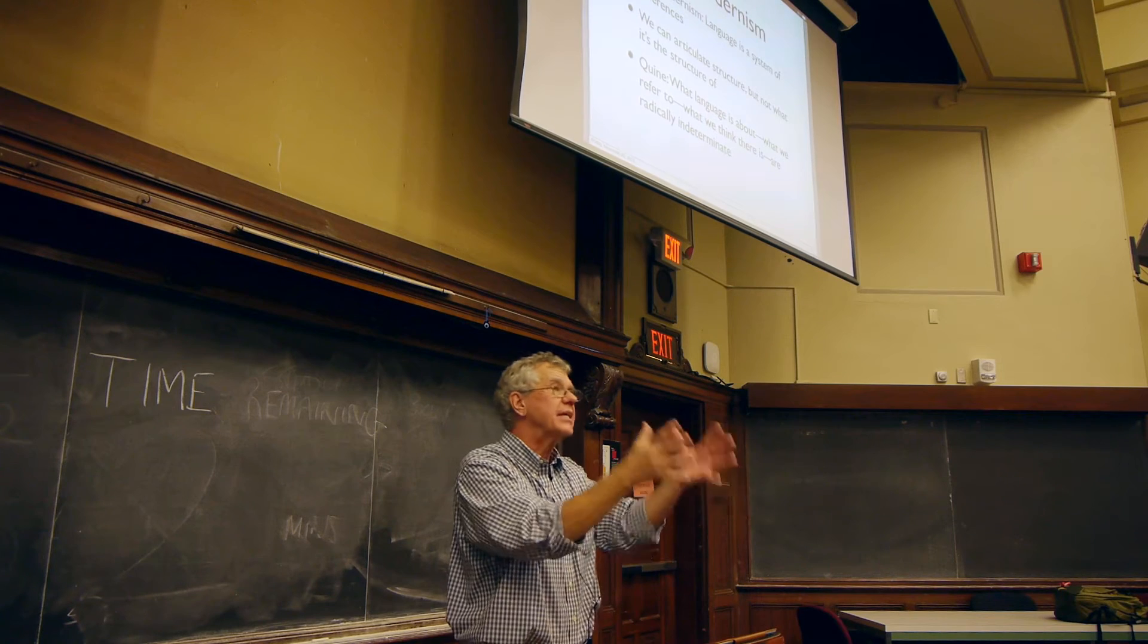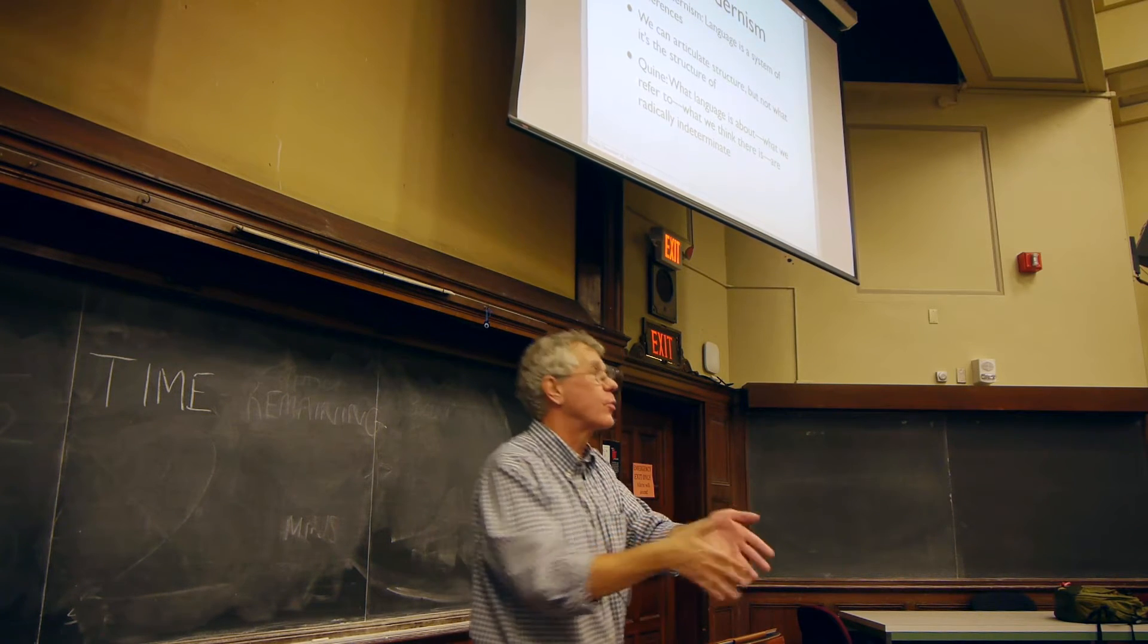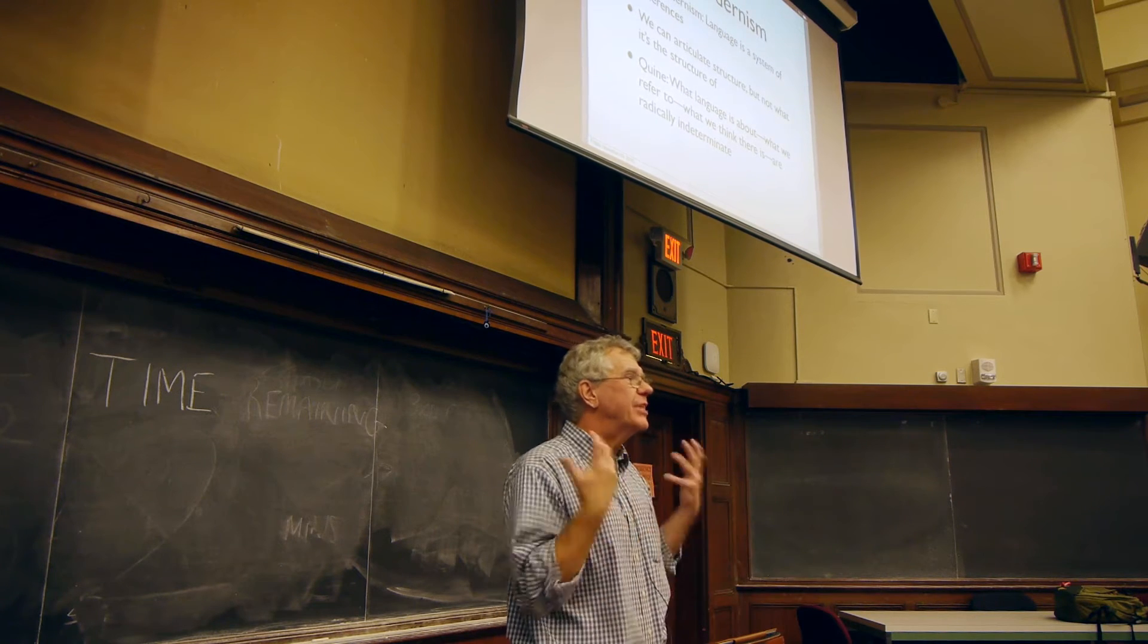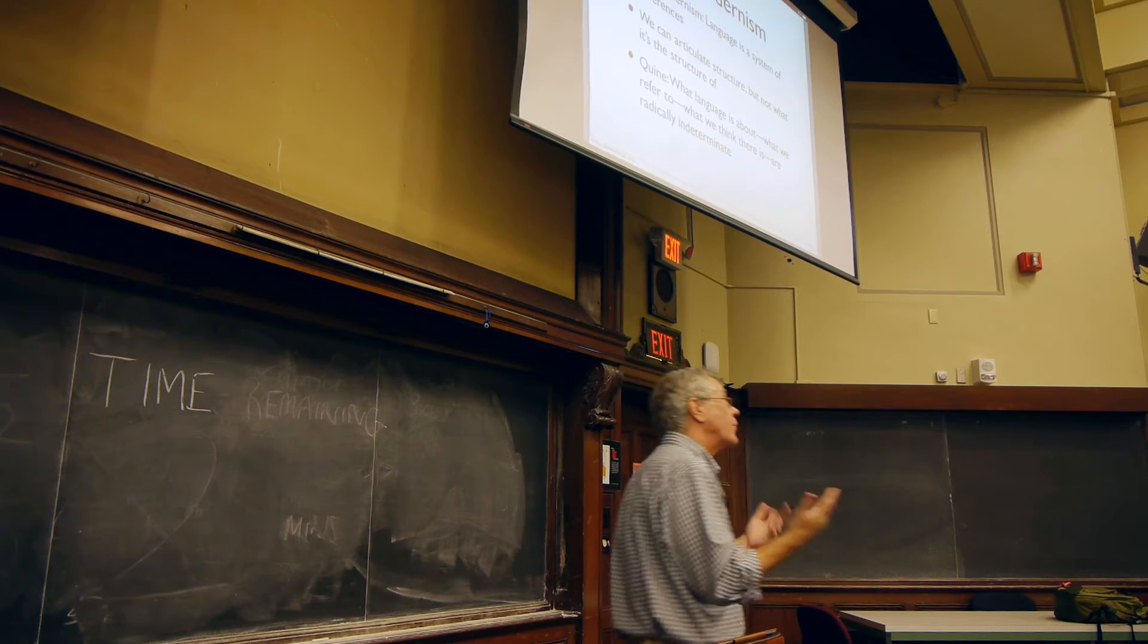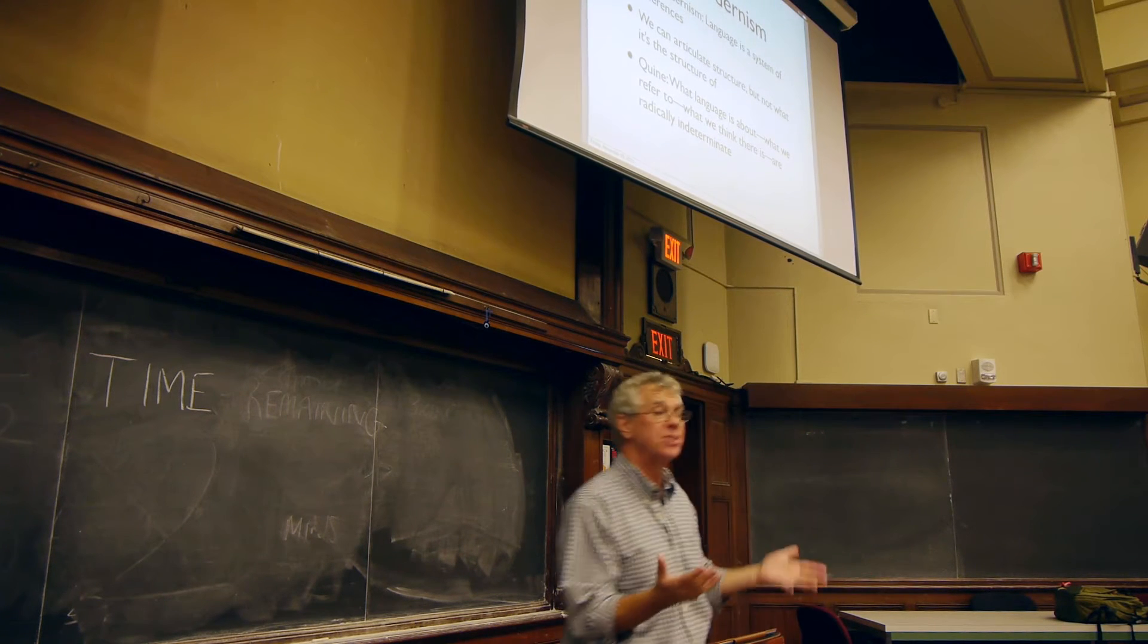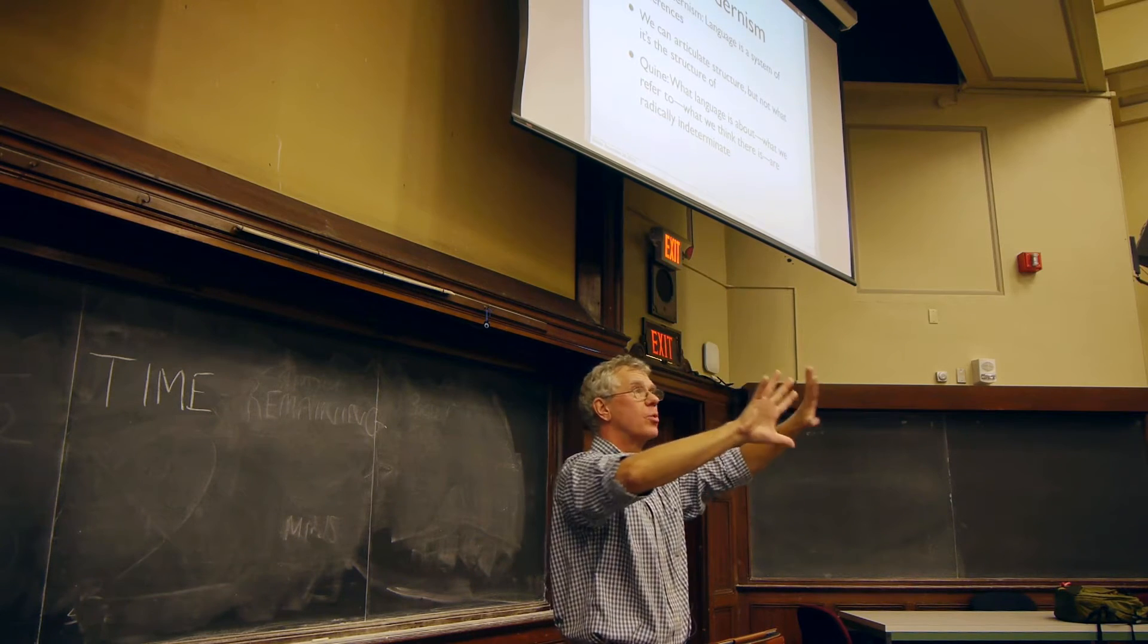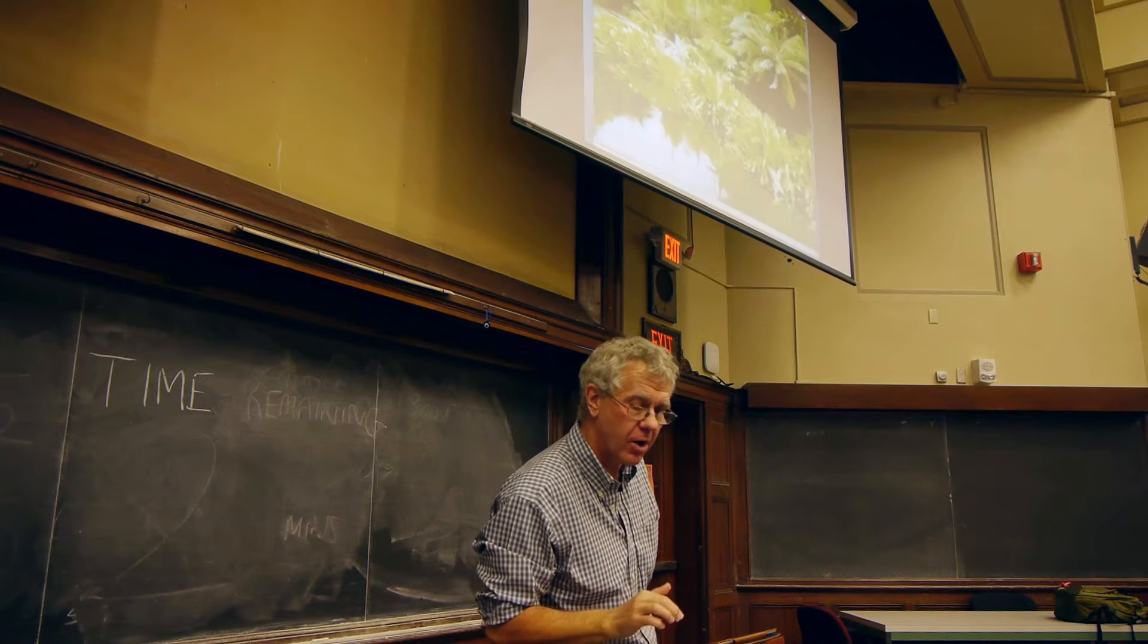One way of looking at this is to say the postmodernist says language, a conceptual framework, is really just a system of differences. We can articulate a structure, but not what it's the structure of. And Quine says that's exactly right. We can't explain what, in the end, we actually think is in the world. What language is ultimately about, what we're really referring to, that's radically indeterminate. There just is no fact of the matter about what we're really referring to, or what we even believe the ultimate constituents of the world to be. In the end, there are really just differences we can note about the world. We can note structure. We can't talk about what the things in the structure really ultimately are.